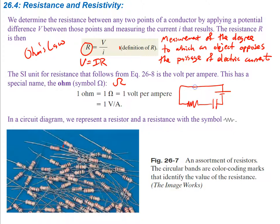Resistors often give off energy — that's one of the ways they control current. For instance, a light bulb can be a resistor, or a heating coil could be a resistor. Even a copper wire by itself is going to have some small amount of resistance.